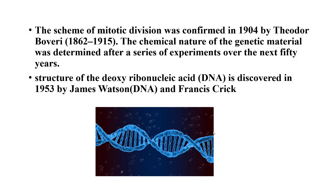The scheme of meiotic division was confirmed in 1904 by Theodore Boveri. The chemical nature of the genetic material was determined after a series of experiments over the next 50 years. Later, the structure of deoxyribonucleic acid — DNA's double helical structure — was discovered in 1953 by James Watson and Francis Crick, who studied this structure in detail.